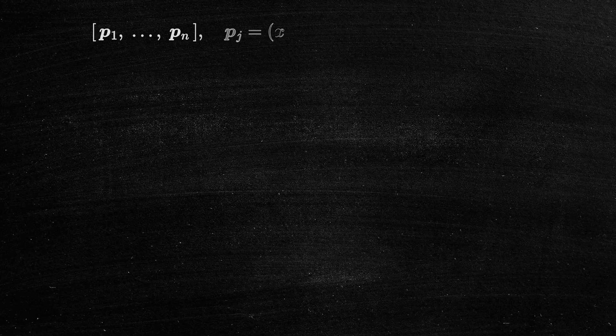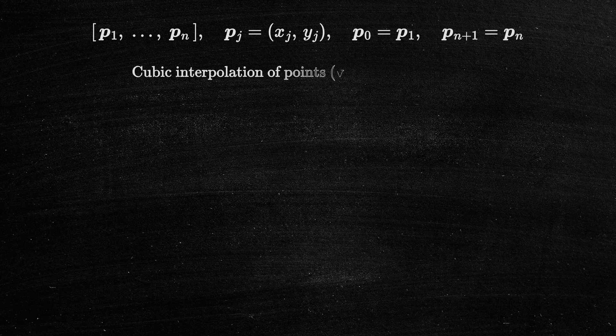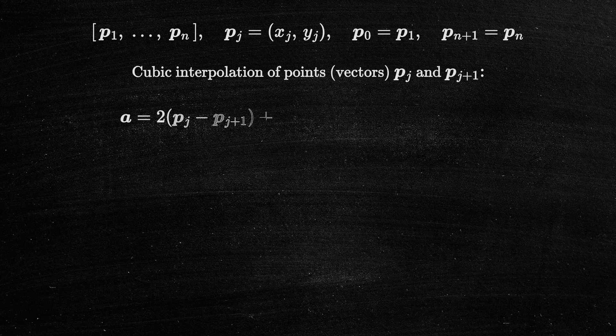To interpolate a list of 2D points, we can extend the same method. We treat each point as a vector, and the interpolation between two distinct points, p sub j and p sub j plus 1, is formulated as follows.